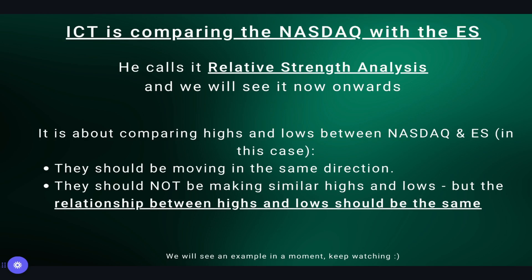What you need to know is that we are going to be comparing highs and lows, very similar to the SMT technique between the Nasdaq and the S&P, and what we expect is that they should be moving in the same direction. They should not be making similar highs and lows, but the relationship between highs and lows should be the same. Let me first show you how to create comparison charts in TradingView and then you're going to see how to actually do the relative strength analysis.